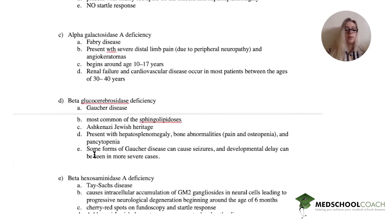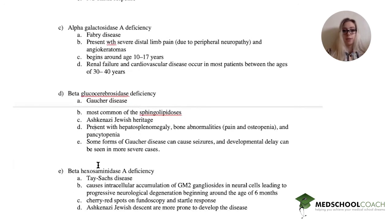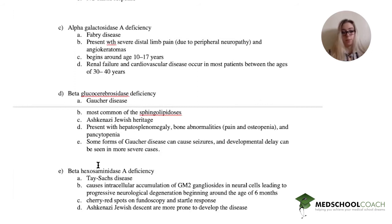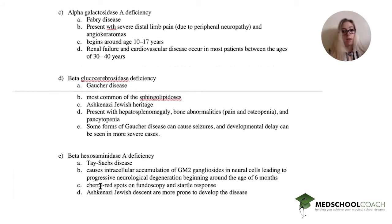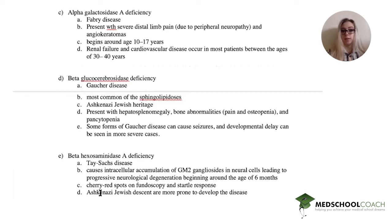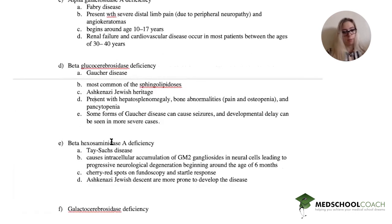Beta-hexosaminidase A deficiency is also called Tay-Sachs disease. It causes intracellular accumulation of GM2 gangliosides in neural cells and causes neurodegeneration at six months — which is consistent. And you see a cherry red spot on fundoscopy, as well as a startle response. Those of Ashkenazi Jewish descent are more prone to develop the disease. That sounds like a pretty good option.